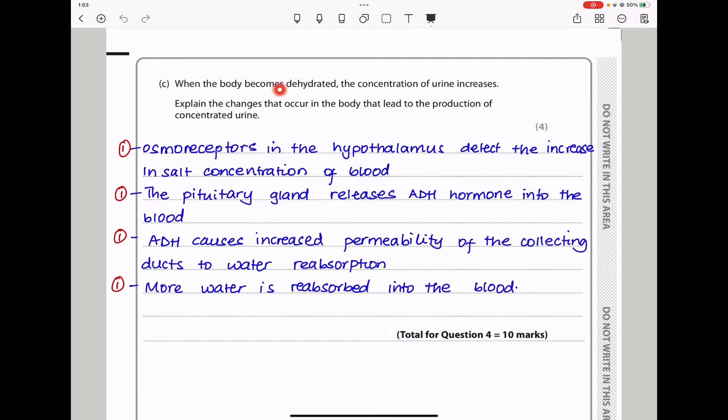Here they say, when the body becomes dehydrated, the concentration of urine increases. Explain the changes that occur in the body that lead to the production of concentrated urine. Inside our bodies, we have receptors. And for water, we have osmoreceptors. These detect the changes in the concentration of blood or the salt concentration in blood. I said osmoreceptors in the hypothalamus detect the increase in salt concentration of blood.